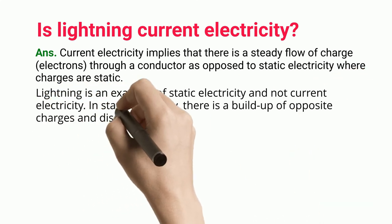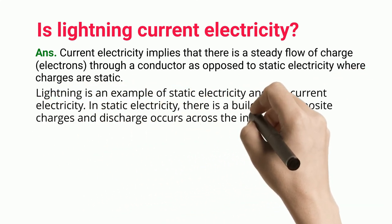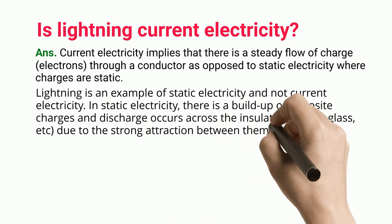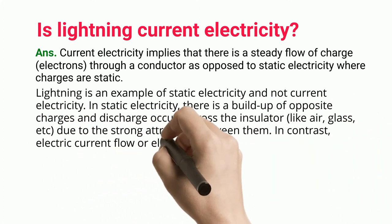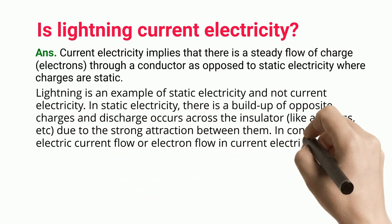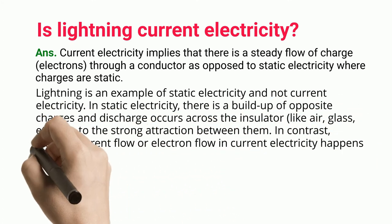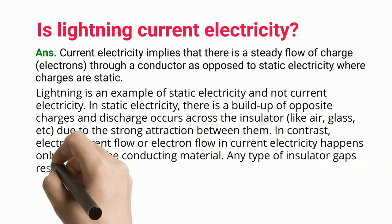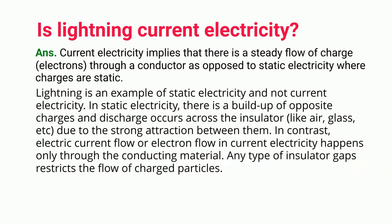In static electricity, there is a buildup of opposite charges and discharge occurs across an insulator like air, glass, etc., due to the strong attraction between them. In contrast, electric current flow or electron flow in current electricity happens only through conducting material — any type of insulator gap restricts the flow of charged particles.